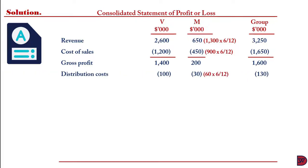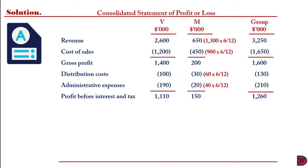Subtracting cost of sales from revenue gives gross profit of $1,400 for the parent, $200 for the subsidiary, and $1,600 for the group. We pick distribution costs using the full parent figure and half the subsidiary figure and add them for the group total. For administrative expenses: $190 for the parent, $20 for M, and $210 for the group. Profit before interest and tax is $1,110 for Viki, $150 for M, and $1,260 for the group.